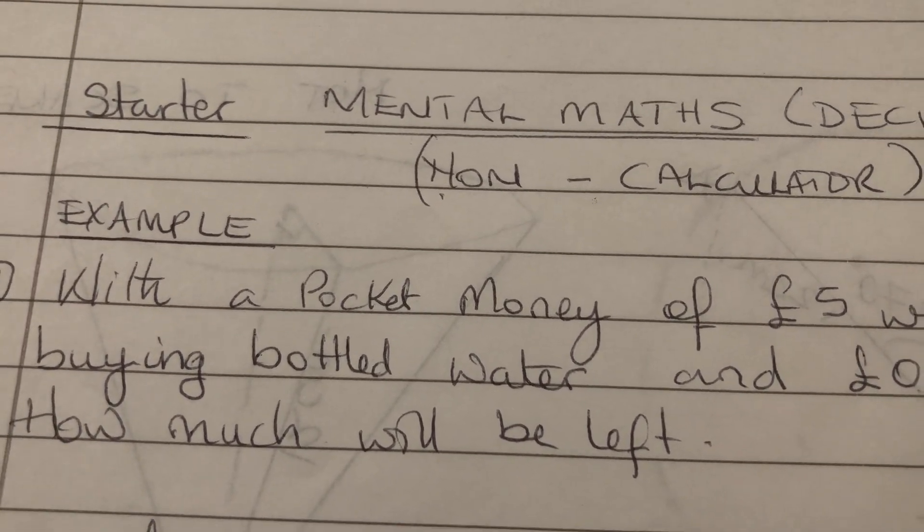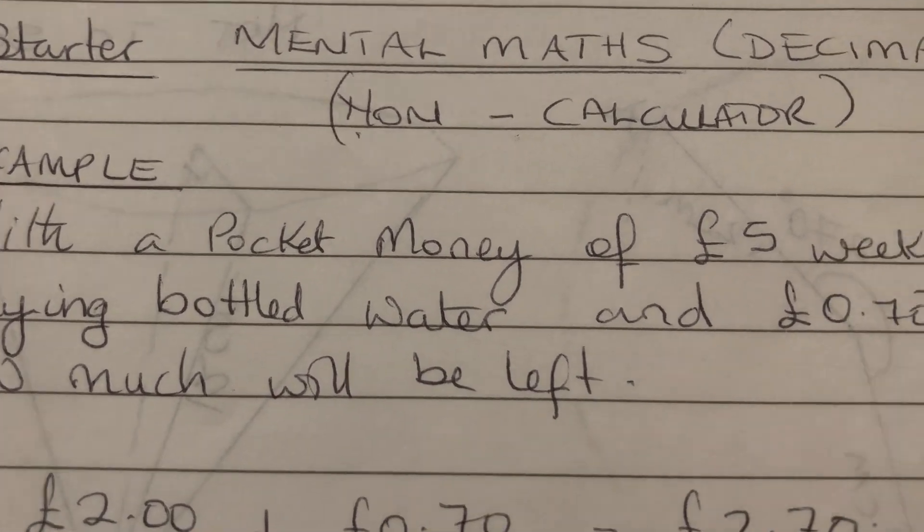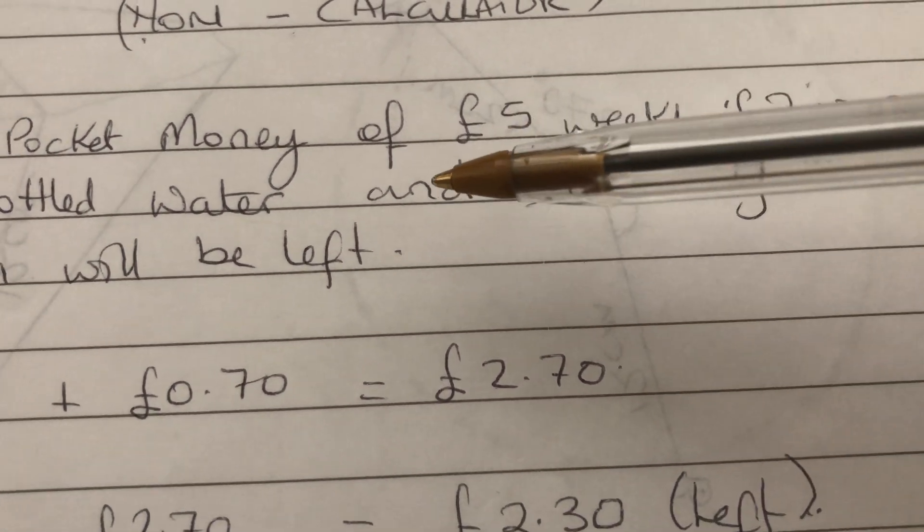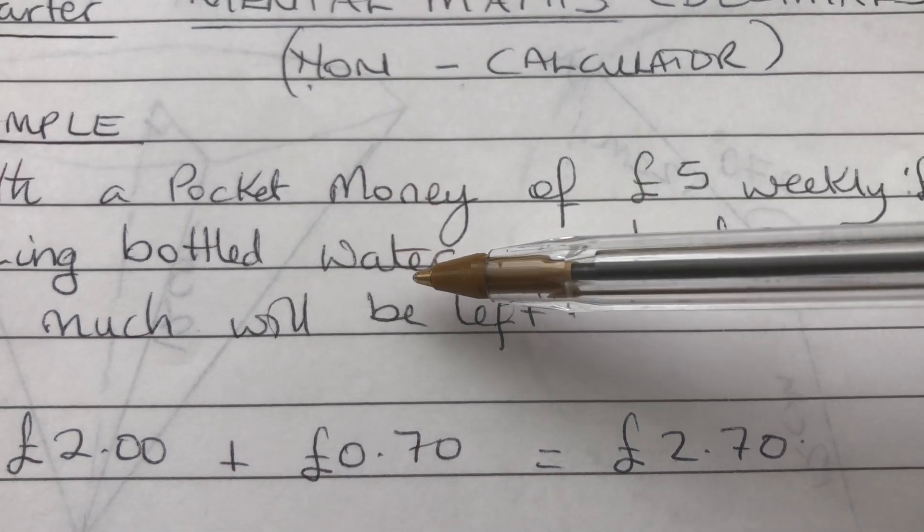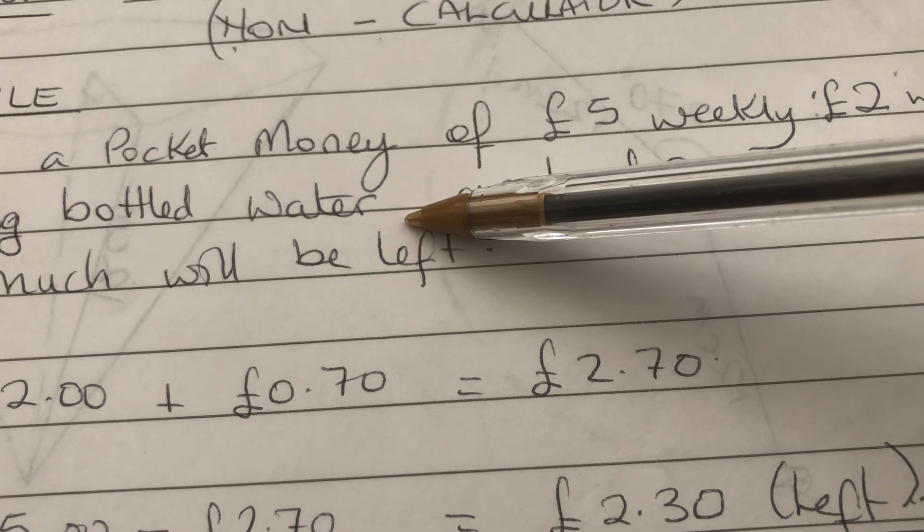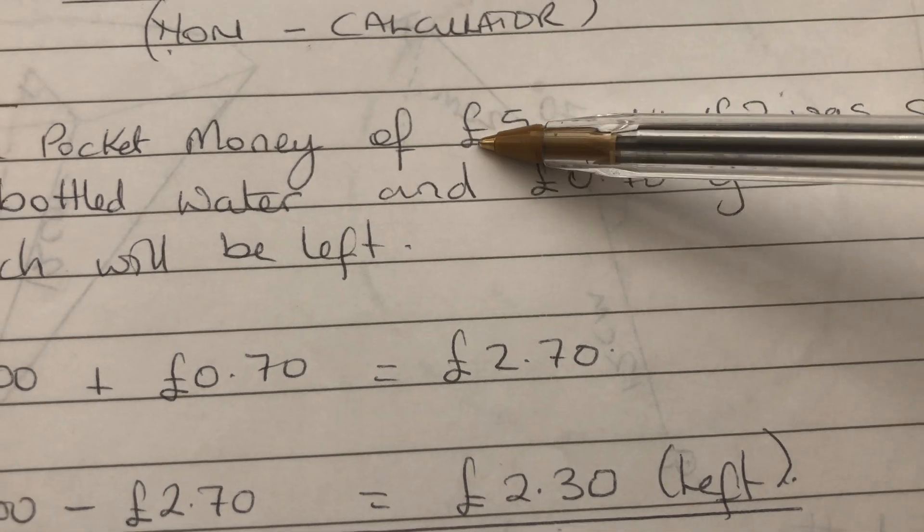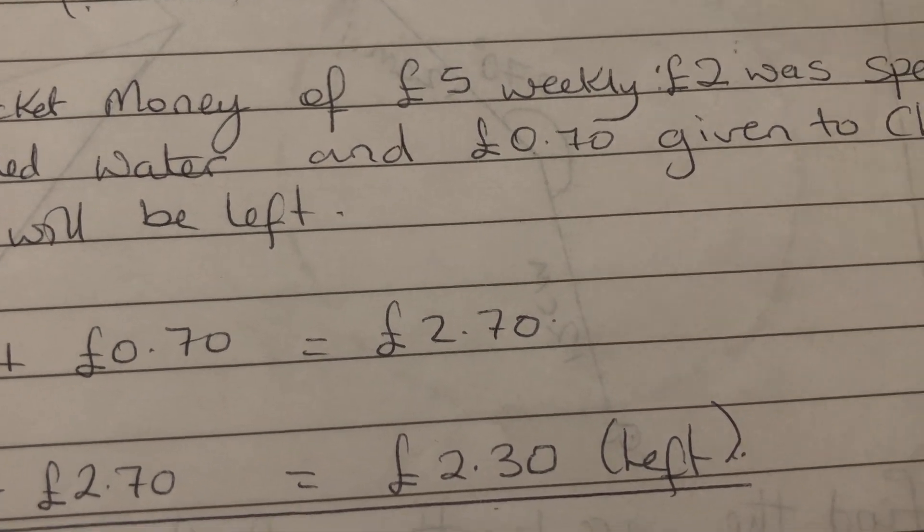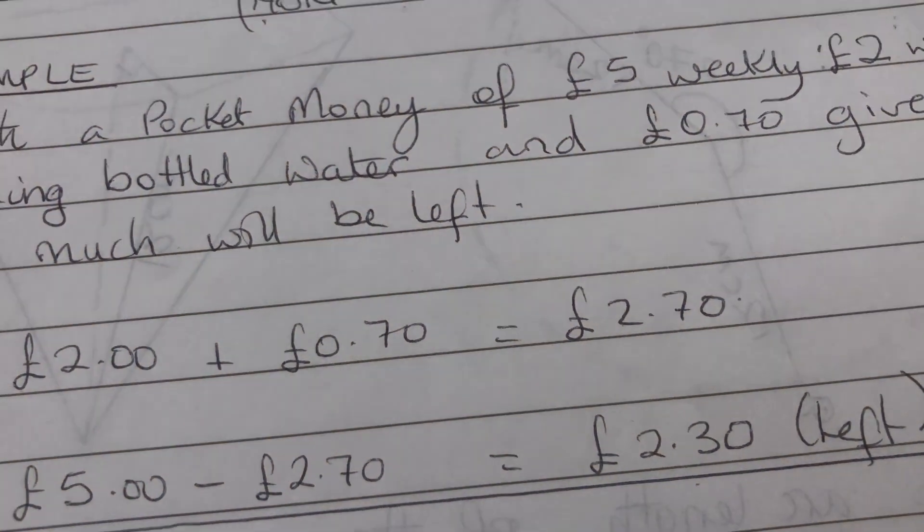Today, our mental math, again, is non-calculator. So, with the pocket money, I'll redo the lemonade question. With the pocket money of £5 weekly, £2 was spent buying bottle water. So, in a week, you always spend £2. You give yourself five-pound pocket money, you allocate £2 to buy water. And then, 70p, giving to charity, how much should be left?